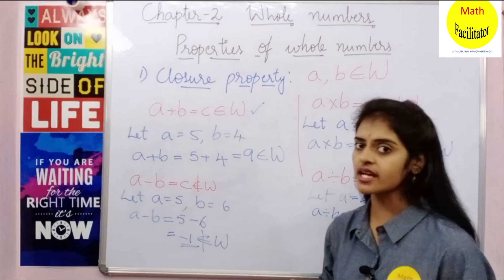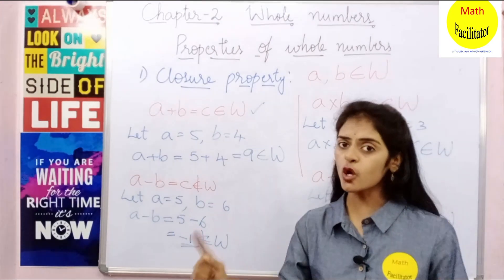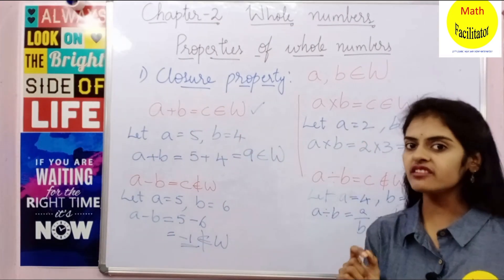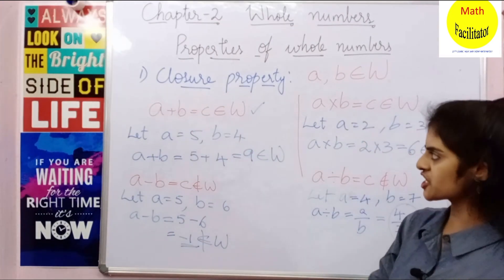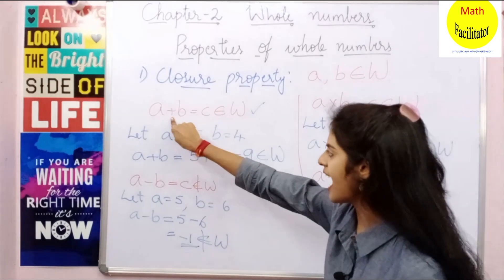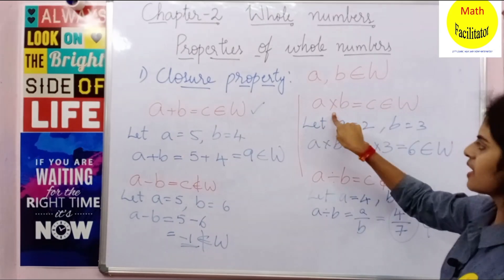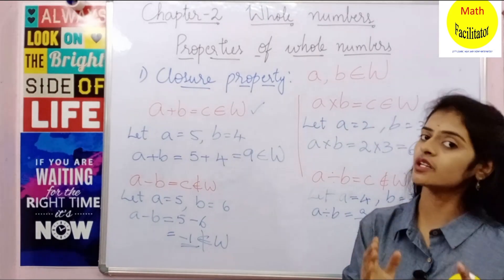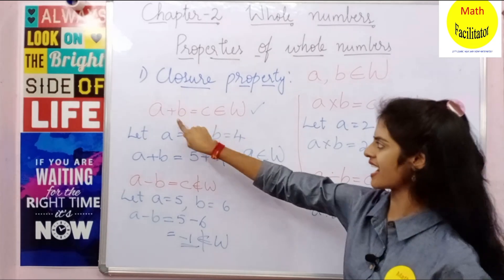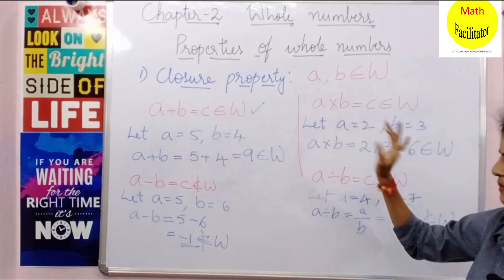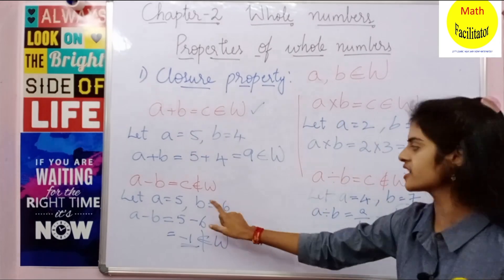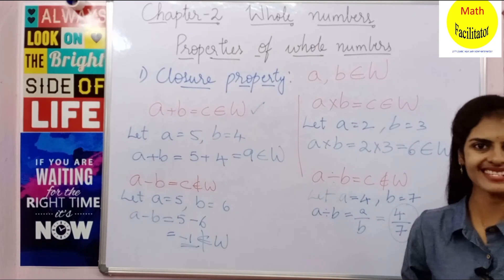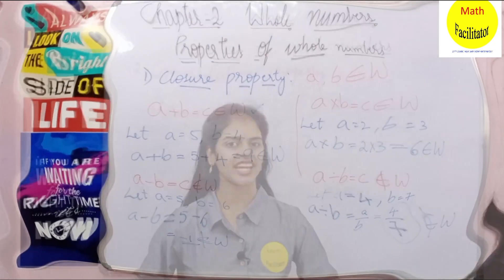So we say that whole numbers are closed — under which operations? Under addition and multiplication. Whole numbers are closed under addition and multiplication. Why not subtraction and division? You have seen the examples.